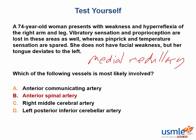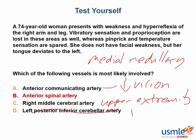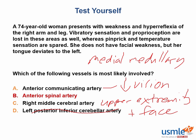Another commonly tested syndrome is Wallenberg or lateral medullary syndrome, caused by a stroke in the PICA. Symptoms include ataxia, vertigo, hoarseness, loss of pain and temperature in the ipsilateral face and contralateral trunk, as well as Horner syndrome. A stroke in the PCA would lead to visual defects, and a stroke in the MCA would cause sensory loss and weakness in the contralateral upper extremity and face.